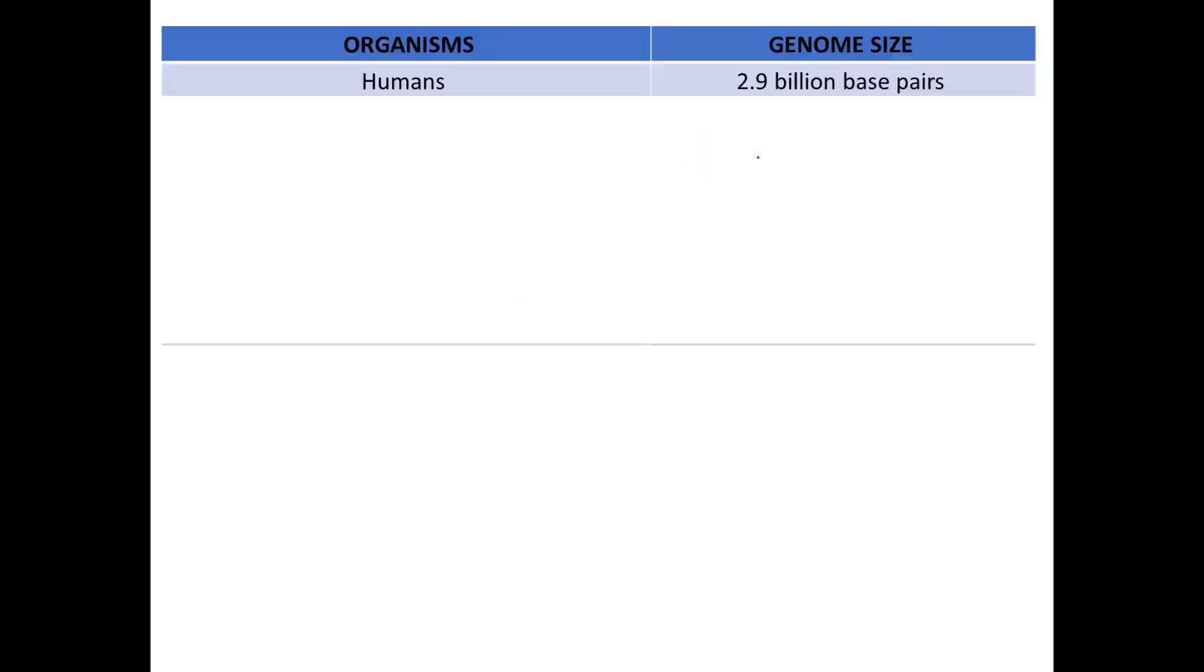So firstly the genome size of humans. Very frequently asked question. The genome size of humans is 2.9 billion base pairs. Next you have E. coli. E. coli genome size is 4.6 MB.